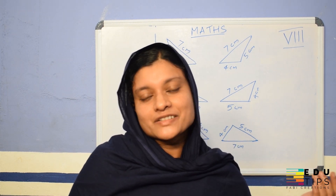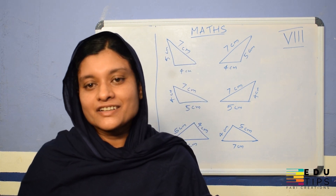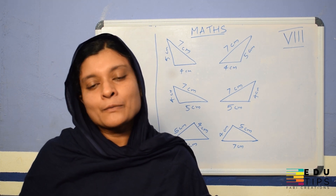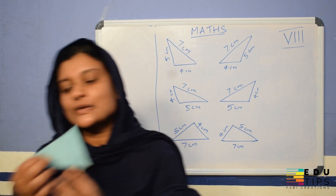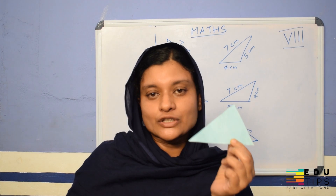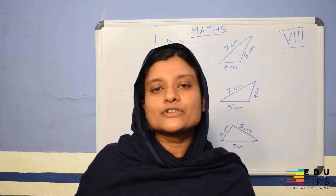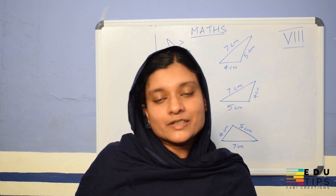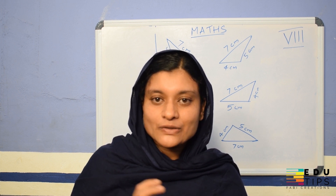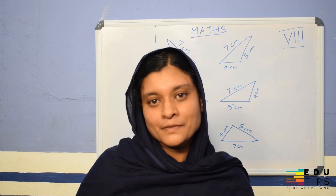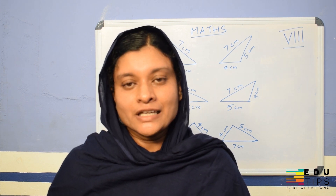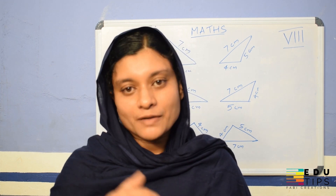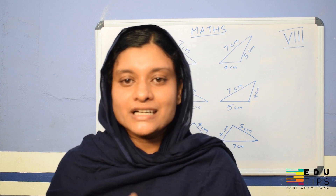We have seen that triangles can be categorized by their sides and their angles. A triangle has three sides and three angles. There are six elements in total. All sides remaining equal gives an equilateral triangle, and there are triangles classified along these different scales.